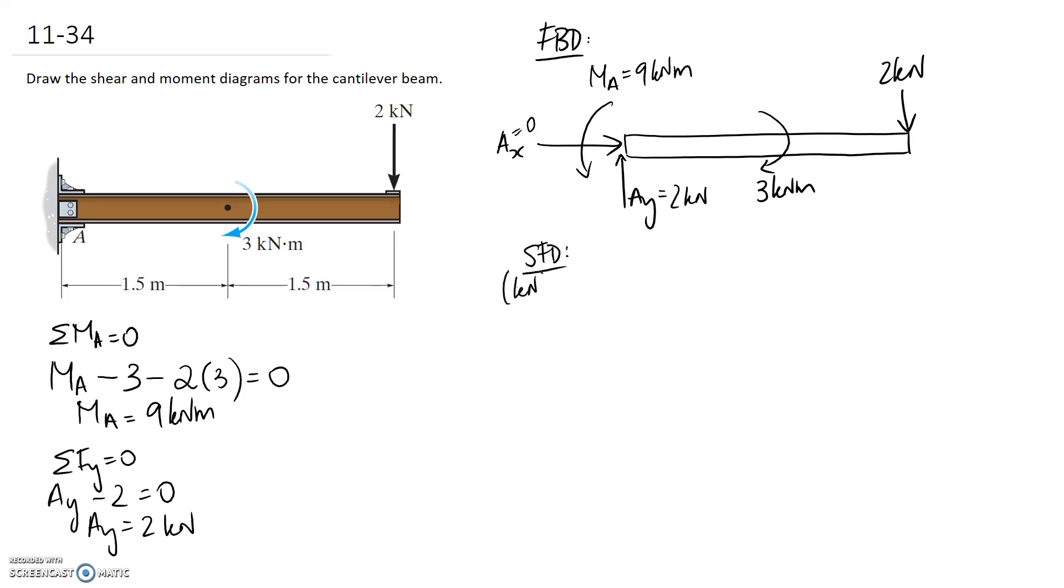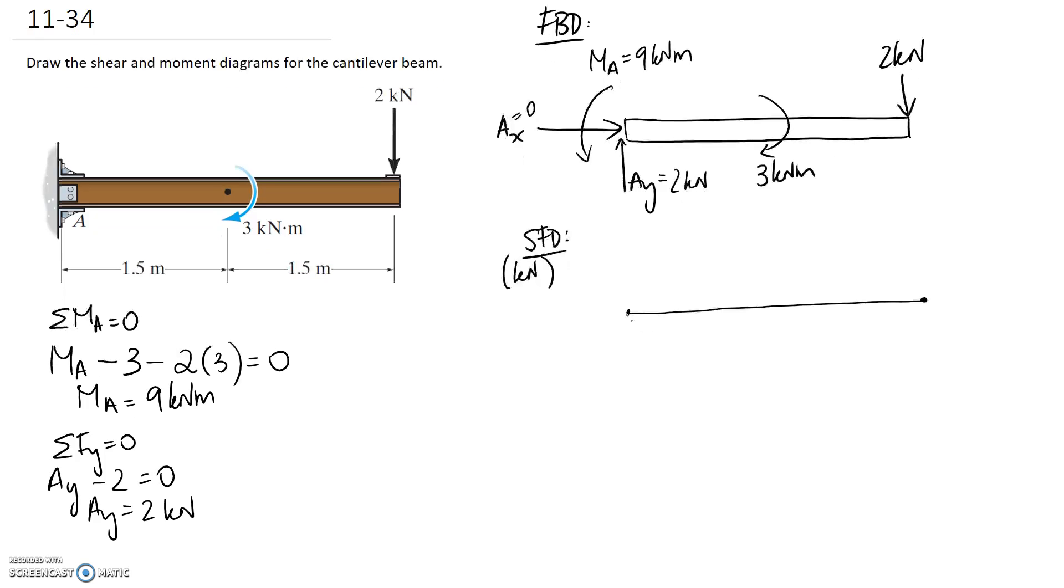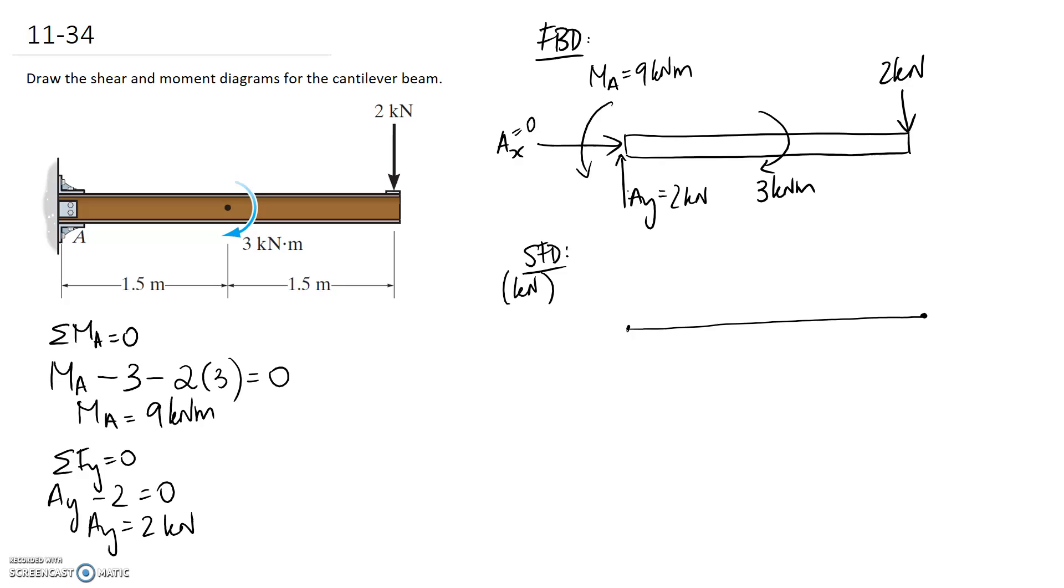So we can jump straight in and start to draw the shear force diagram. Remember that we follow the forces and we need to make sure we start and end at zero. So at the beginning what happens is immediately we have this force of two kilonewtons going upwards so our shear force diagram is going to go up to two, and all the way along here we have no additional forces acting. This is a couple so it's not going to affect the force diagram.